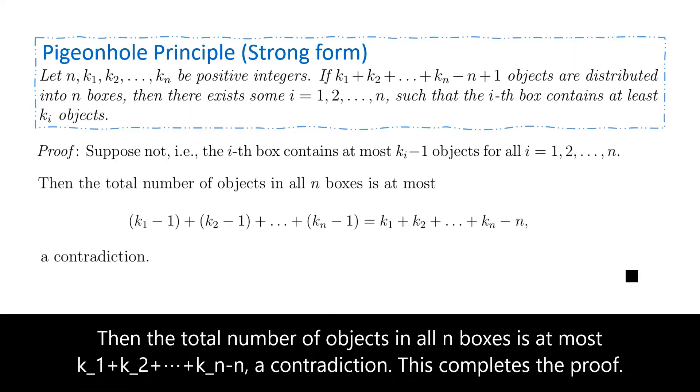Then the total number of objects in all n boxes is at most k1 plus k2 plus all the way to kn minus n. A contradiction. This completes the proof.